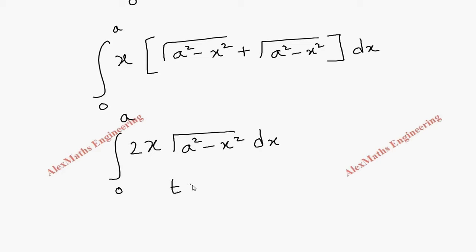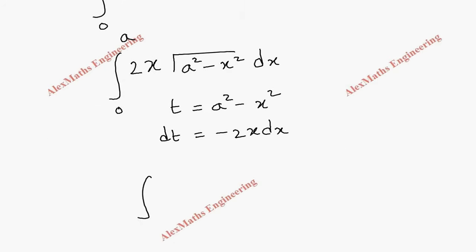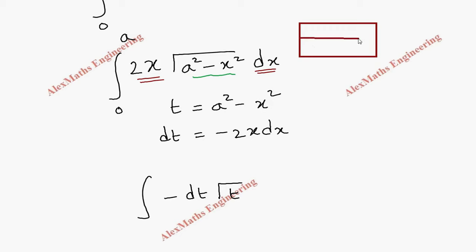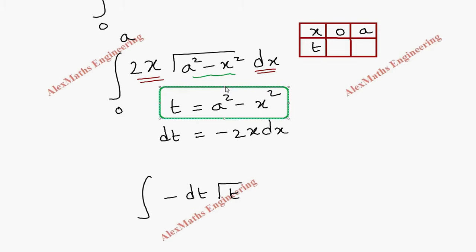Let's use the substitution t equals a squared minus x squared. Then dt equals minus 2x dx, so 2x dx equals minus dt. We also have root t in place of root of a squared minus x squared. Changing the limits: when x equals 0, t equals a squared; when x equals a, t equals 0. So the new limits are from a squared to 0.